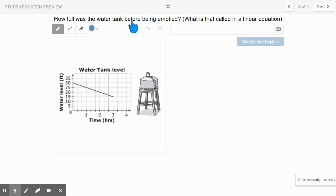How full was the water tank before being emptied? What is that called in a linear equation? Interesting. Look at this graph. How full is it when it started? If you look at it properly, how full it was, it started at 30. Look how full it is at the beginning. So I would say it's 30. It is called the Y intercept. Okay. For some reason, it makes it all weird. It is called the Y intercept. Okay? So 30 is your Y intercept.